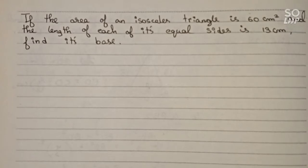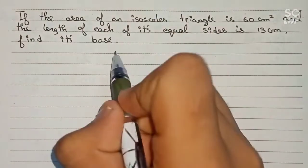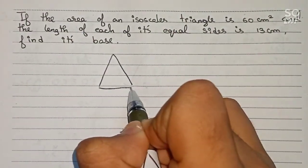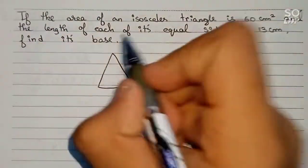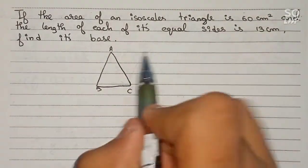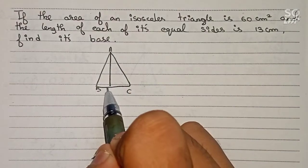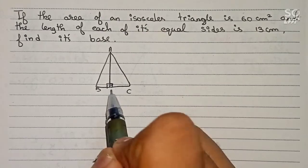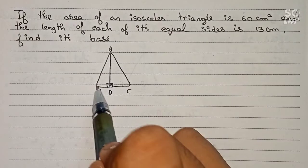First, let's draw the isosceles triangle. Let this be our triangle, and we name it A, B, and C — triangle ABC. Now we draw a perpendicular from A to BC, so this angle will be 90 degrees.